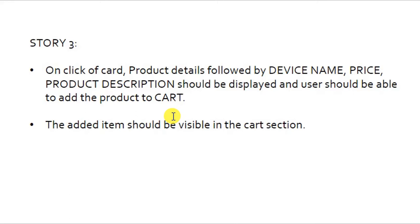Story 3 is about: on click of a card, product details followed by device name, price, and product description should be displayed, and the user should be able to add the product to the cart. The added item should be visible in the cart section.